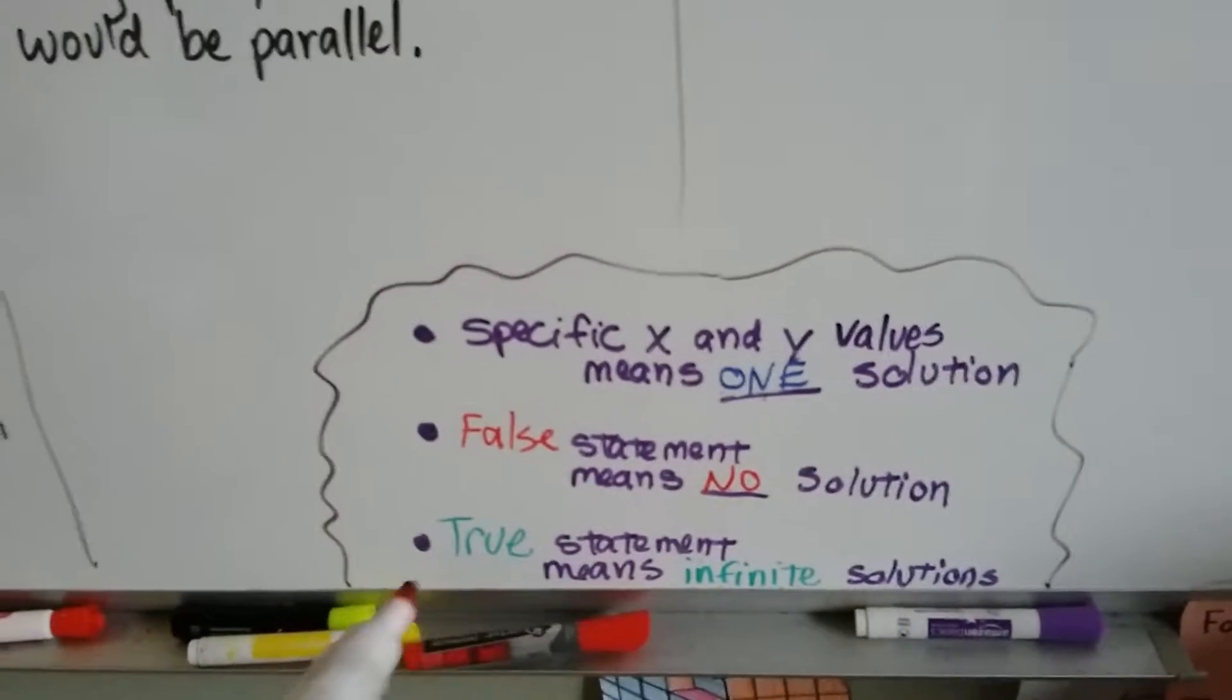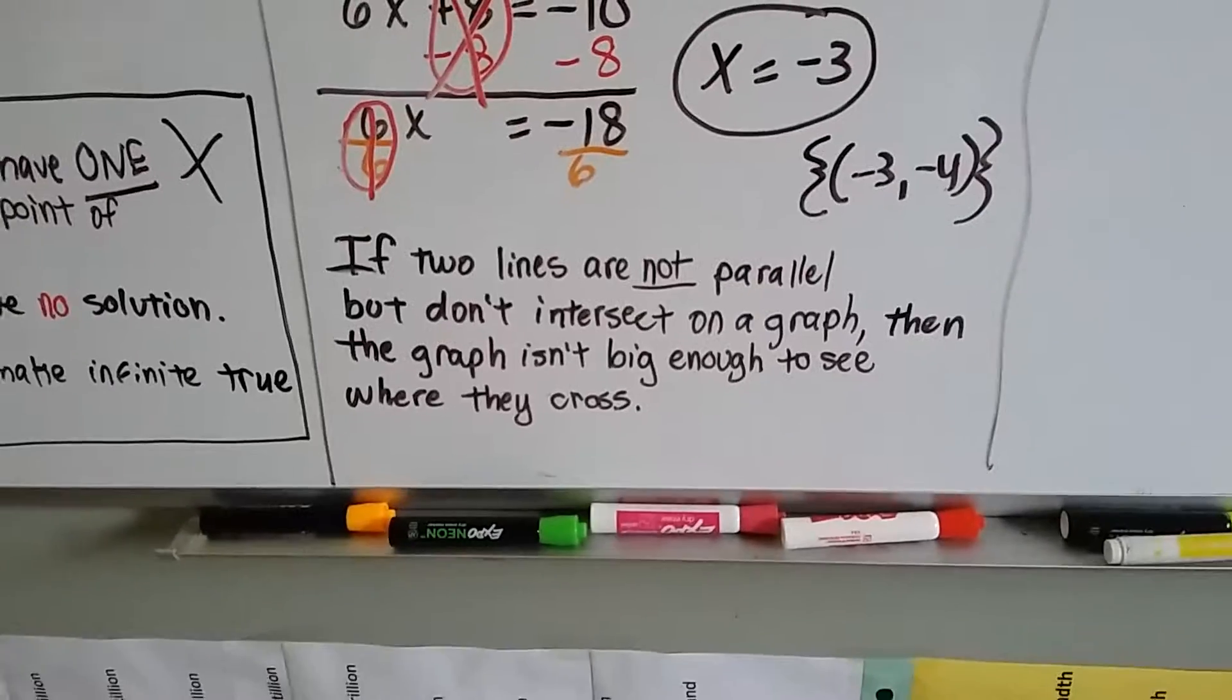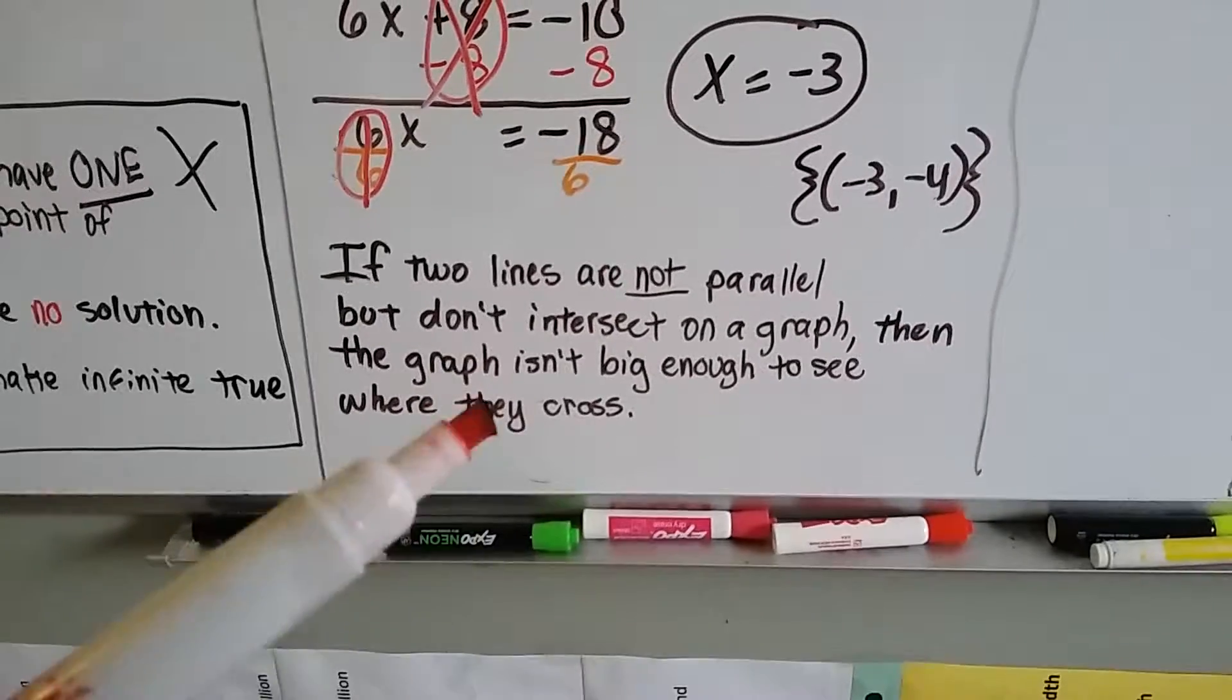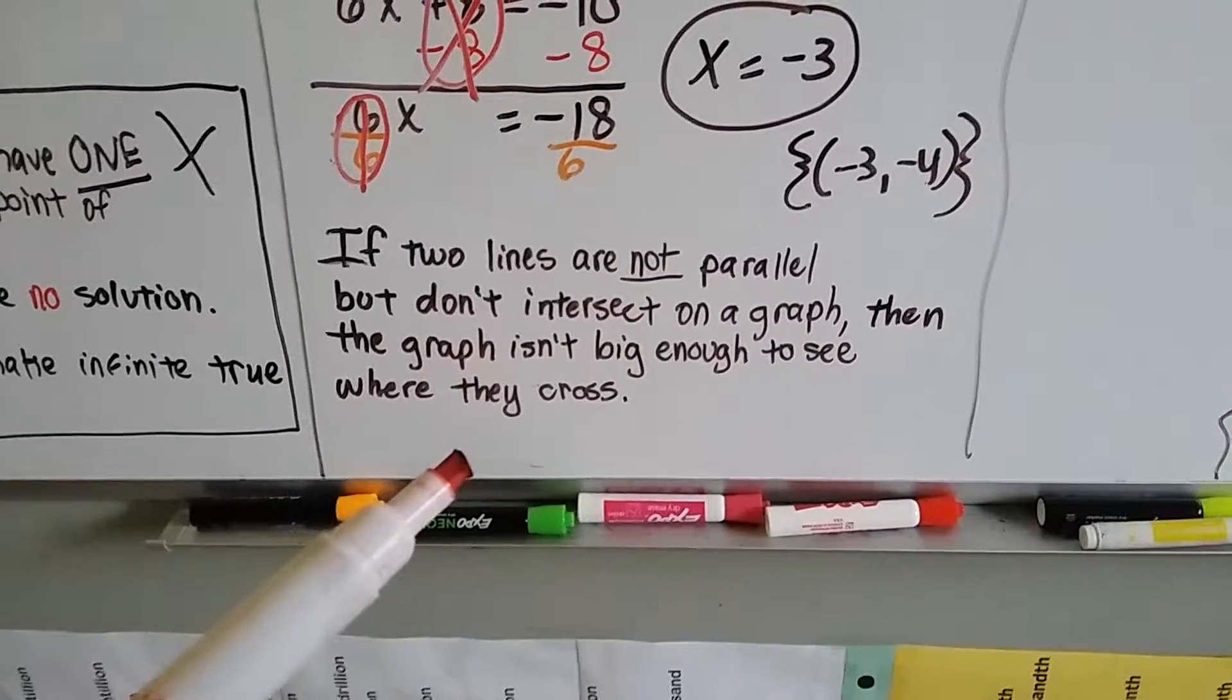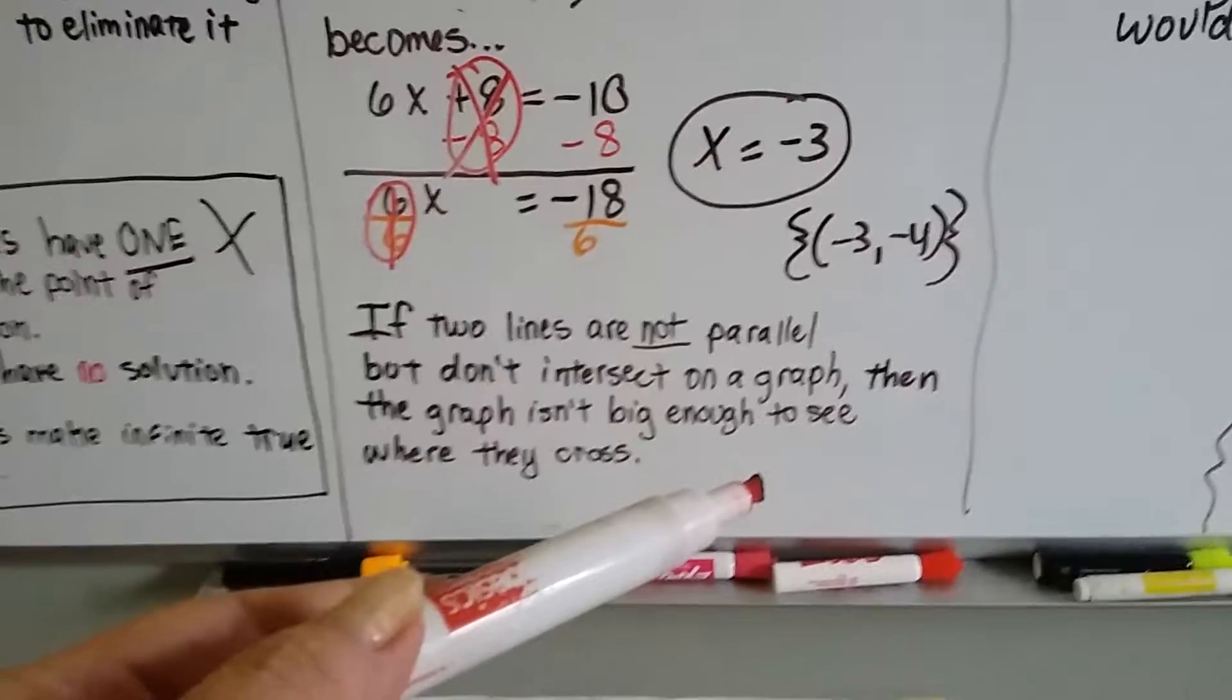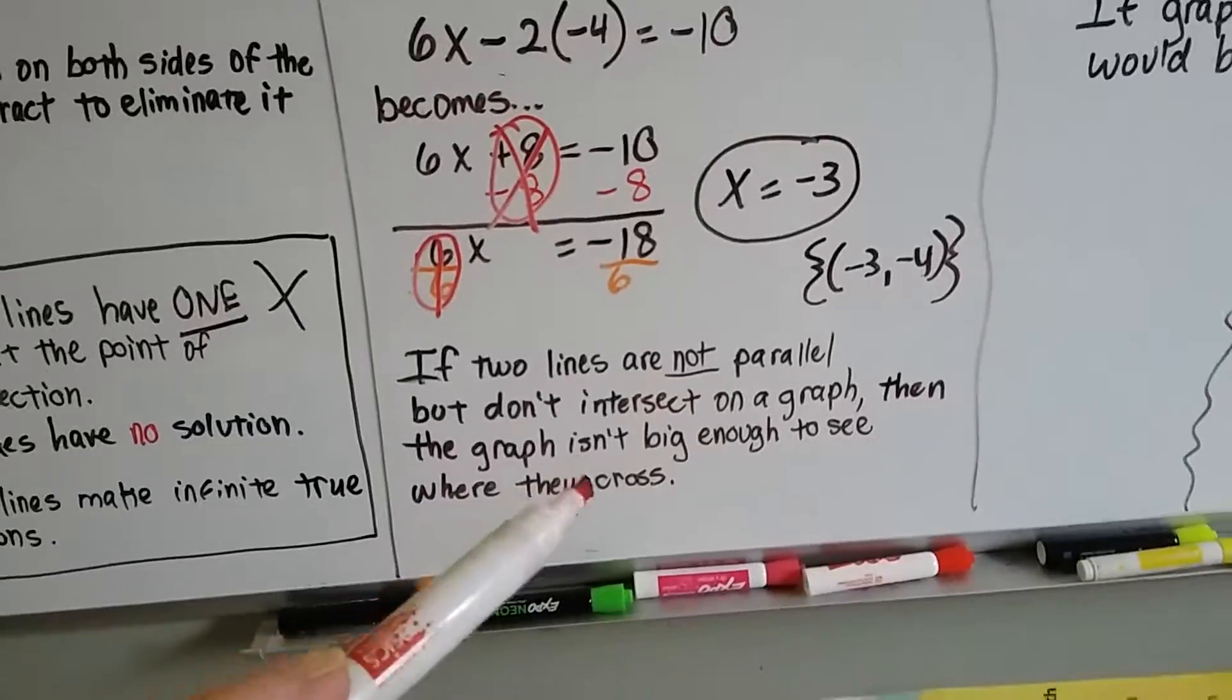Before we move on to transformational geometry in chapter 9: if two lines are not parallel but they don't intersect on a graph, then the graph isn't big enough to see where they cross. Maybe the coordinates are -125 and it's so far away off the graph.